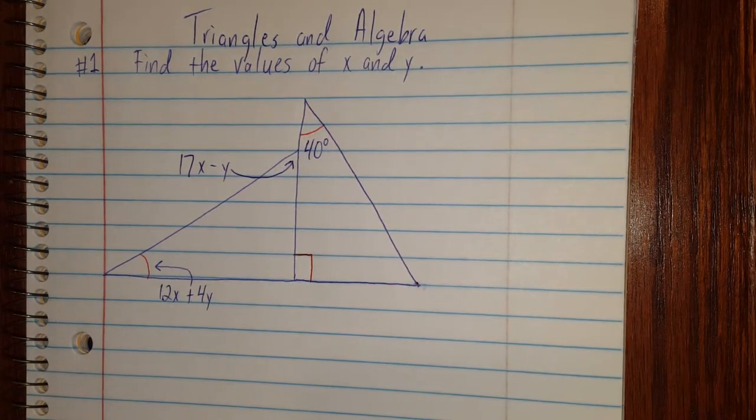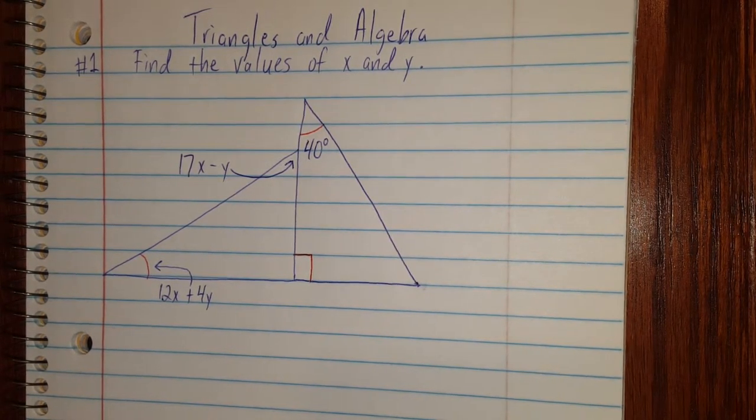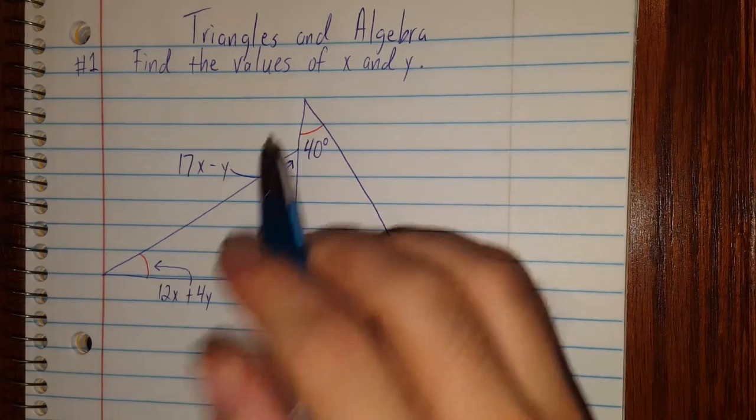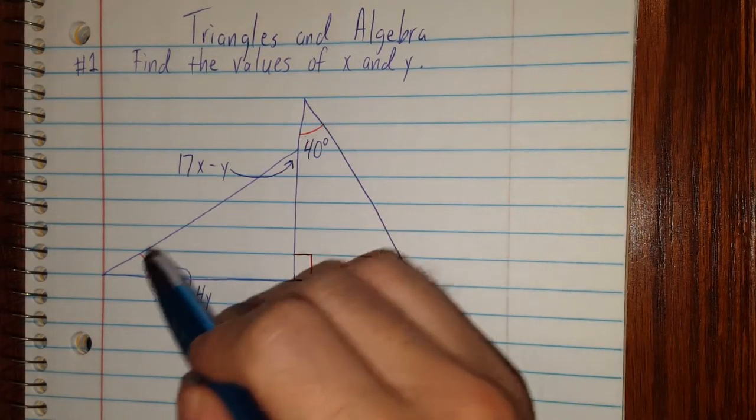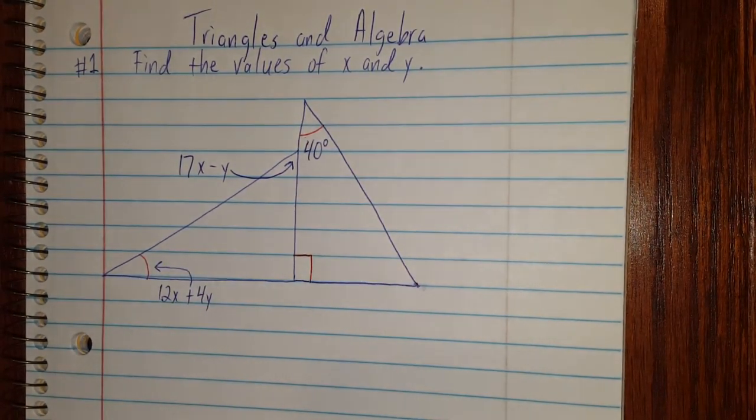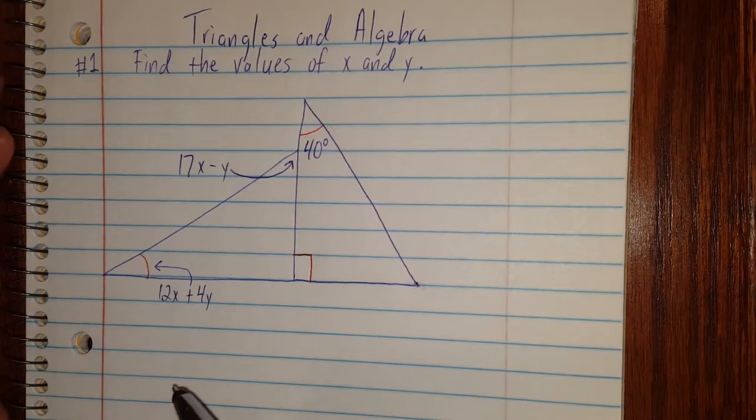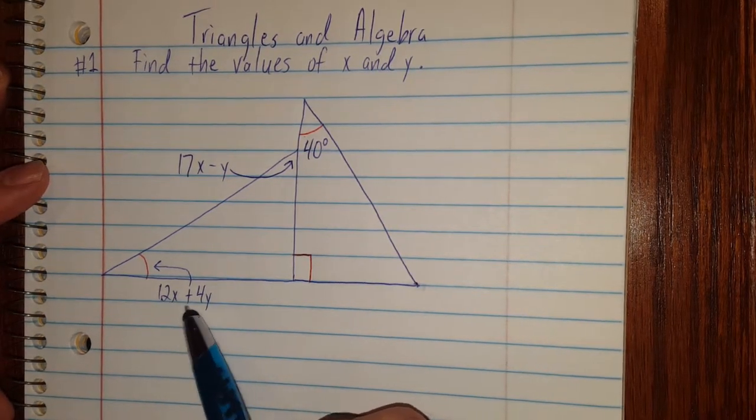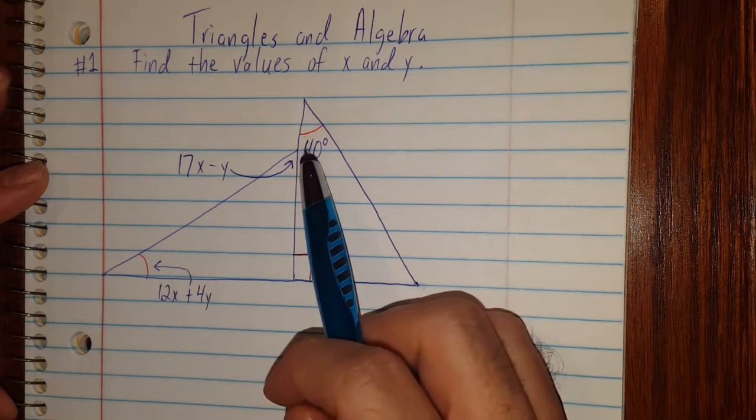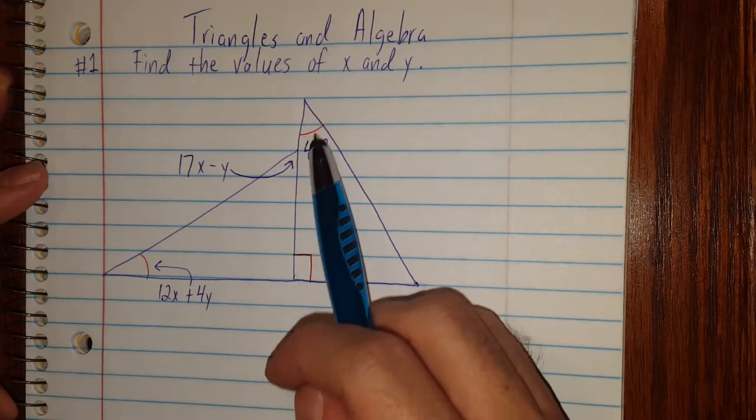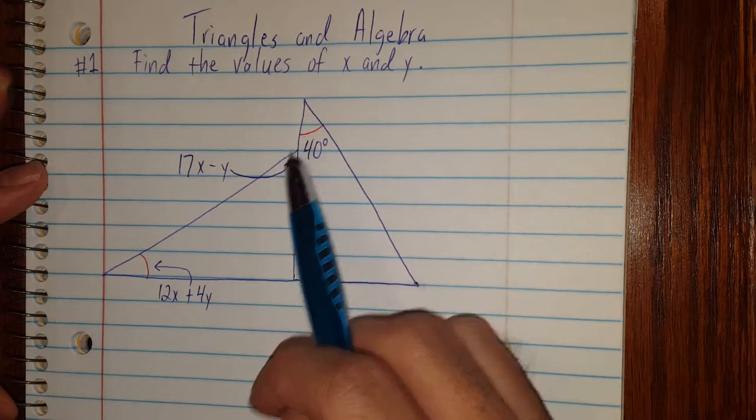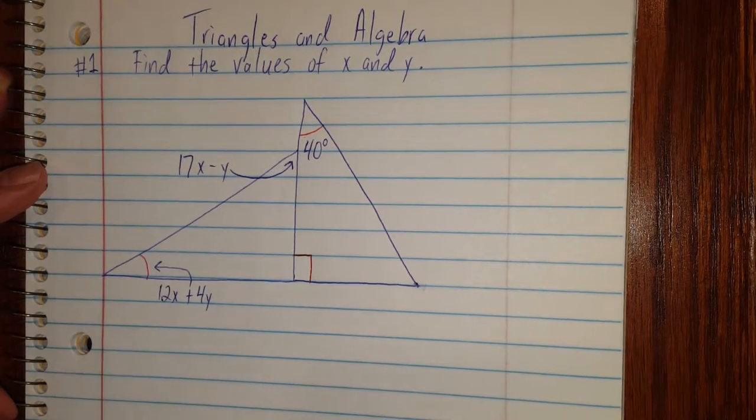In fact, they don't even have to be red, they could be any color that you want. As long as you find this one has one red arc here, it matches with this one red arc here, and it means those angles are the same. So essentially what this is saying to me right now is that 12x plus 4y is the same as 40, or I could say this angle is 40, therefore this angle is also 40.